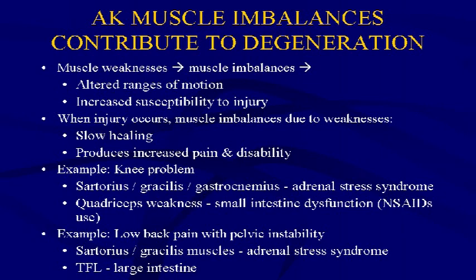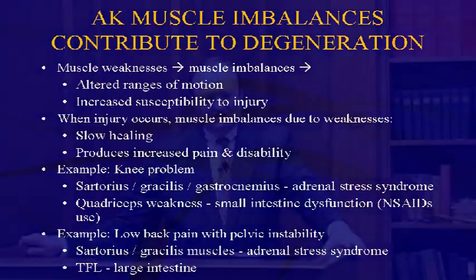With low back pain, the sartorius and gracilis muscles weakened from adrenal stress cause instability in the pelvis due to their attachments on the anterior superior iliac spine and pubic area. The TFL from large intestine dysfunction adds to these weaknesses, making the pelvis and low back unstable from adrenals, small intestine, and large intestine dysfunction due to dysbiosis, food allergies, or NSAID use.